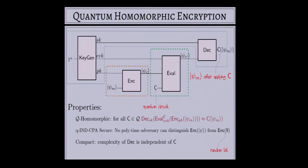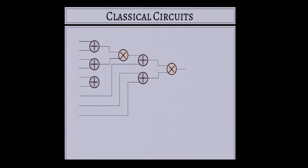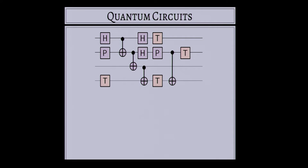To talk more about how we might homomorphically evaluate a quantum circuit, let's consider circuits. In the classical case, addition and multiplication form a universal gate set — any classical function can be expressed as a circuit using addition and multiplication gates. When considering classical homomorphic encryption, it's sufficient to consider how to homomorphically add and multiply ciphertexts. Traditionally, addition is often easy, whereas homomorphic multiplication is the hard operation. Quantum computation can also be expressed as a circuit, but with different gate sets. One thing you might notice: three out of four gates shown here act on a single wire — on a single qubit.